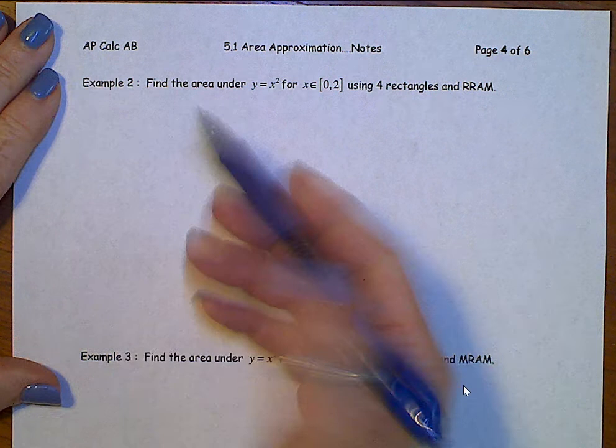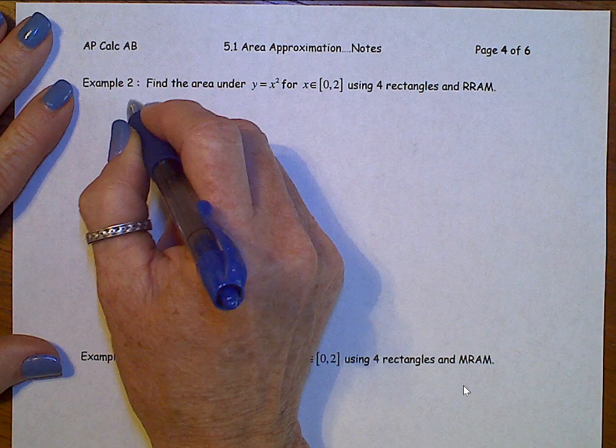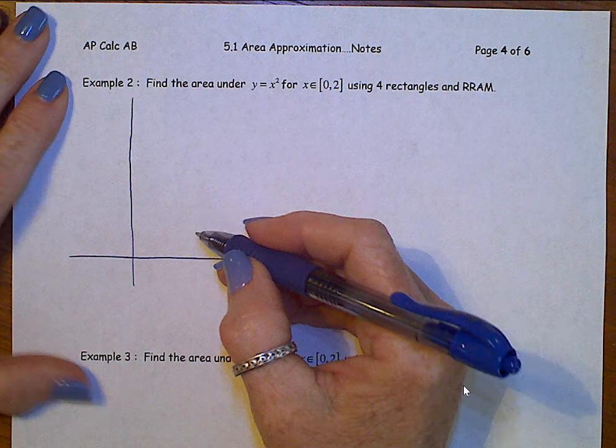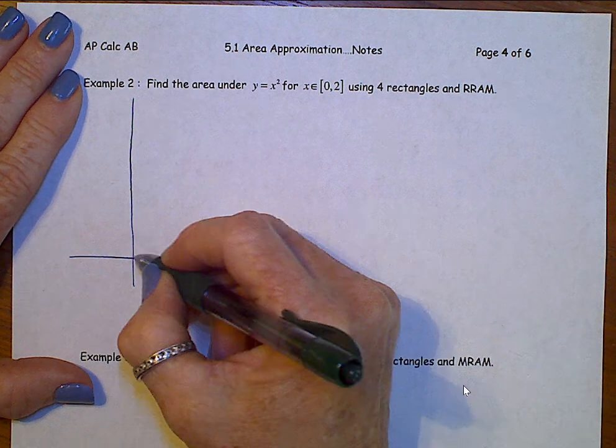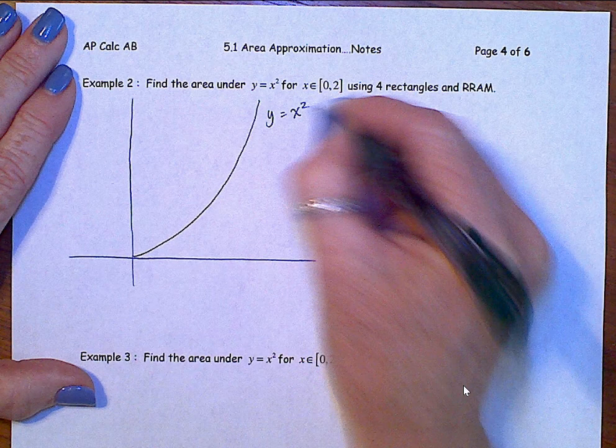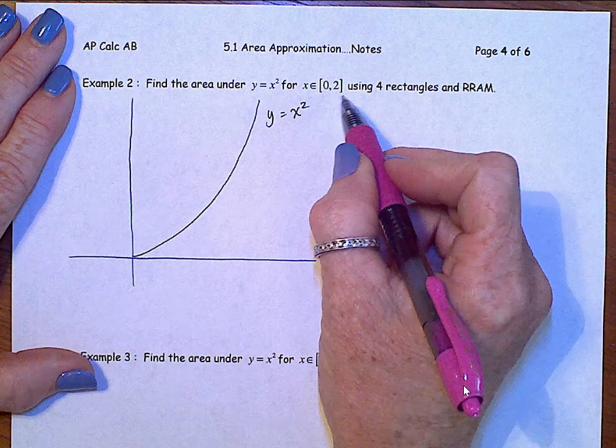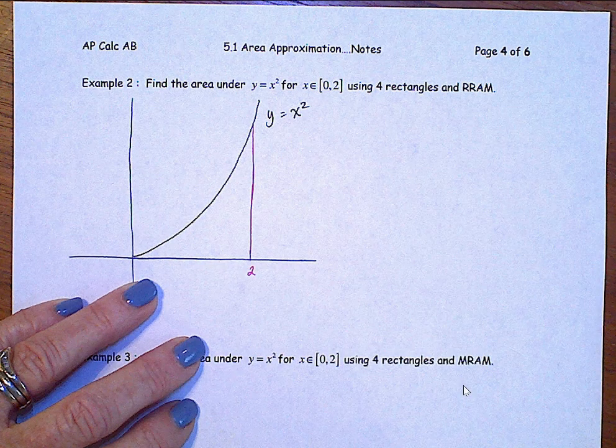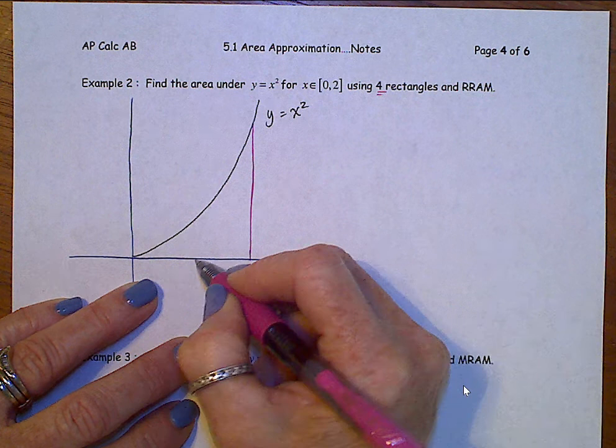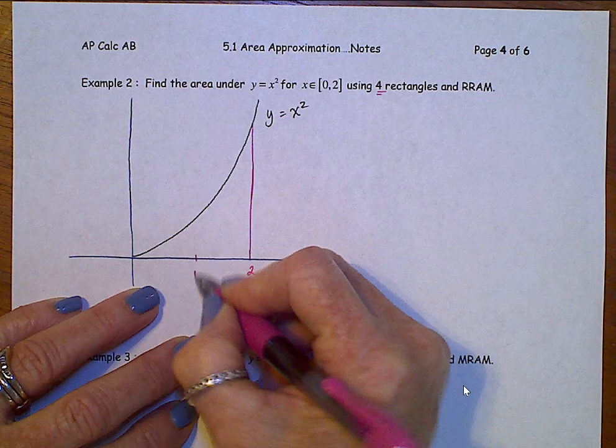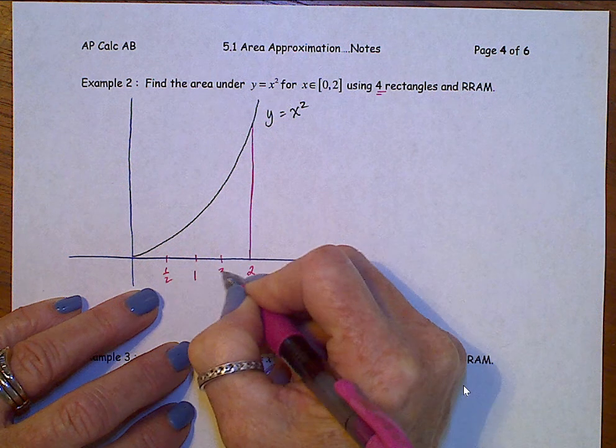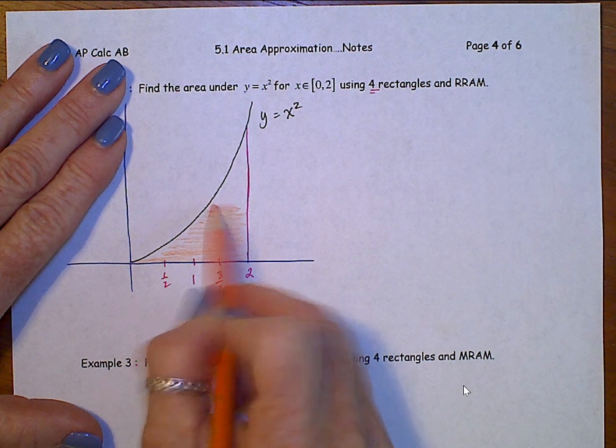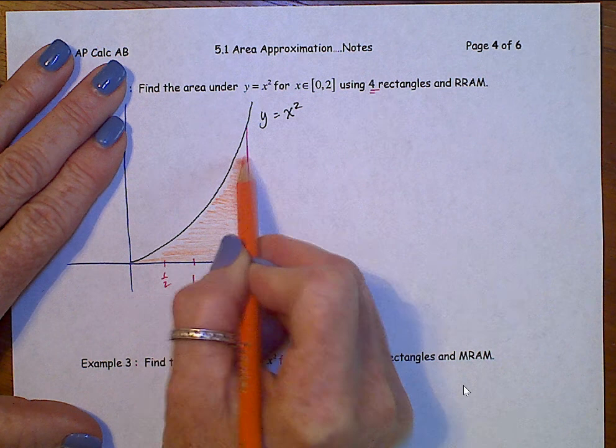Same function as on page 3. So again, we're going to start off by sketching a graph. y equals x squared. And still on a domain for x between 0 and 2. Still 4 rectangles. So we can divide this up. And if you want to shade the area that we need to find, this area here.